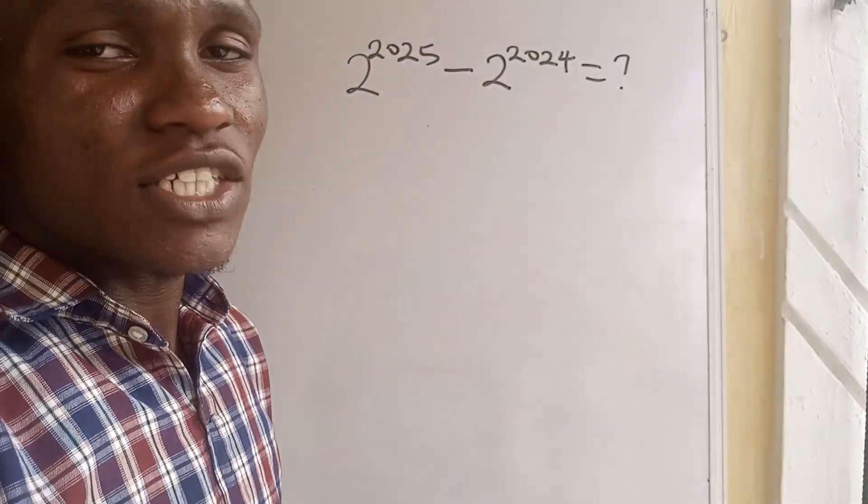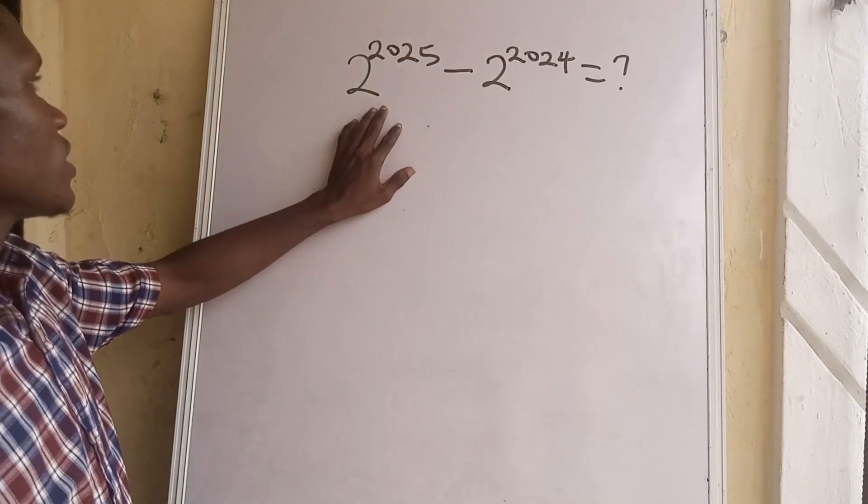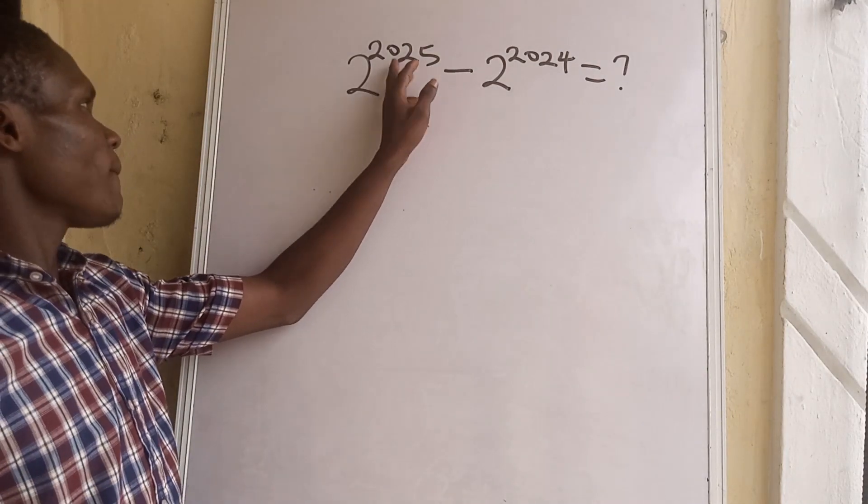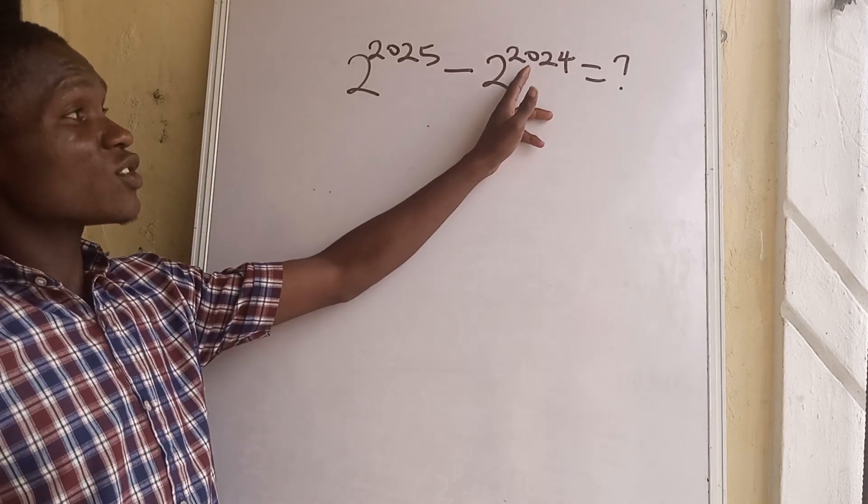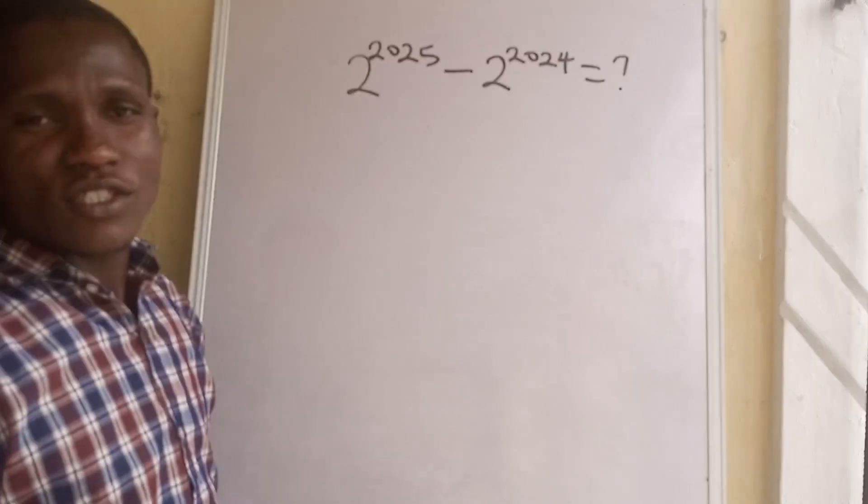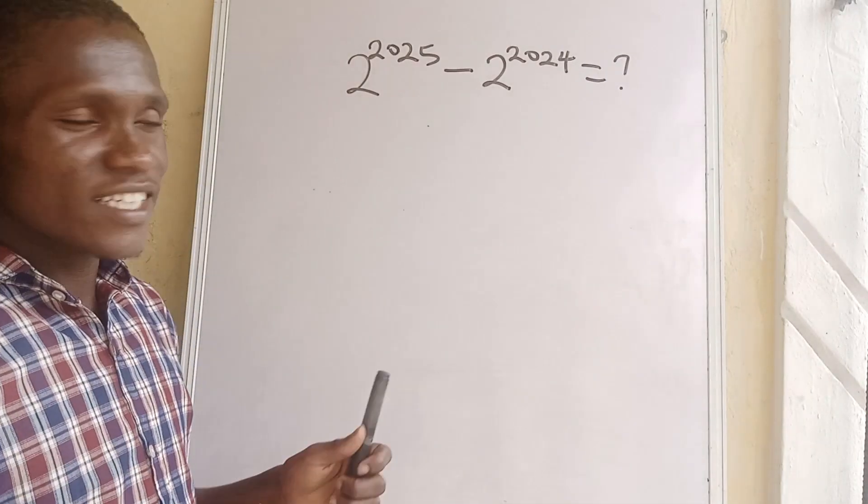Okay welcome again to Bright Bright City Grass where problems of math is easily resolved. Today we are looking at a question which says 2 to the power of 2025 minus 2 to the power of 2024 is equal to what. So how we going to solve this is my challenge.